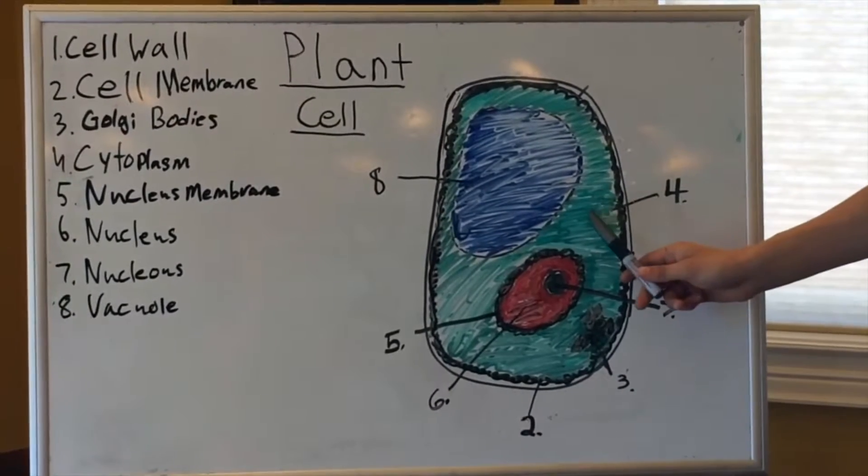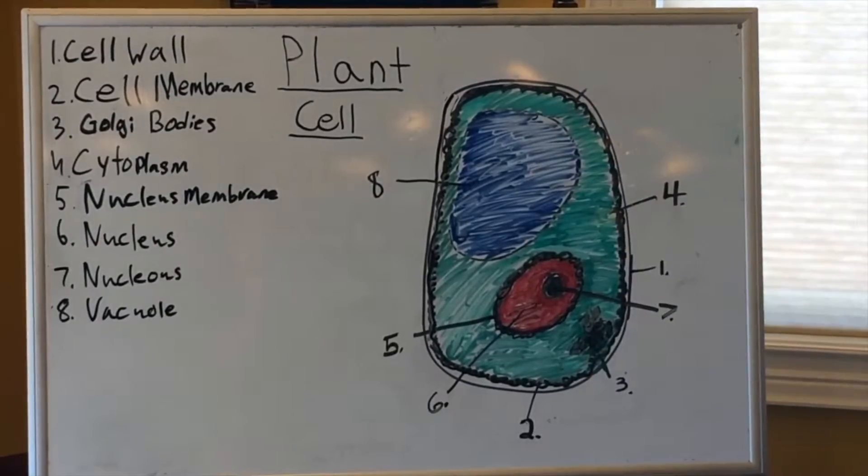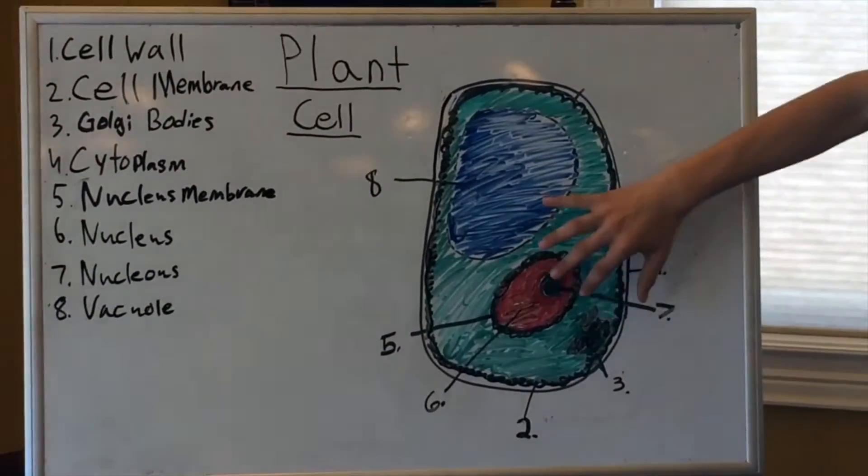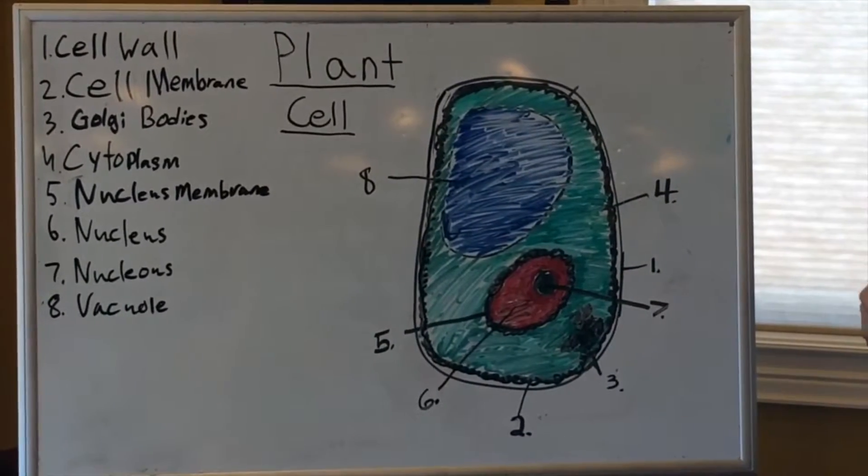Then we have the cytoplasm. The cytoplasm is all this little green stuff we have outlined. It is kind of like a road for all the food and other stuff that goes between all the other parts of the cell.